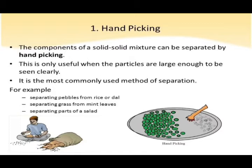The first method is hand picking. The components of a solid-solid mixture can be separated by hand picking. This method is only useful when the particles are large enough to be seen clearly. It is the most commonly used method of separation. For example: separating pebbles from rice or dal, separating grass from mint leaves, and separating parts of a salad.